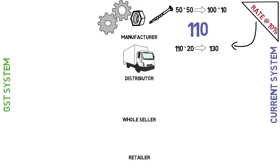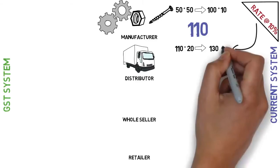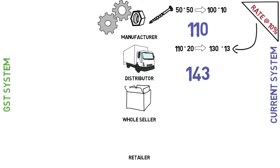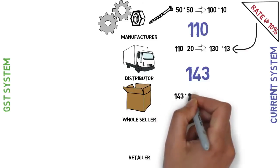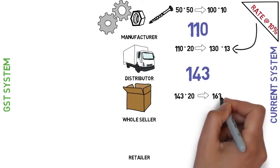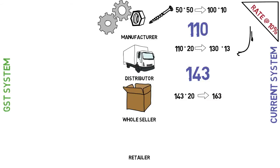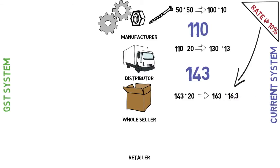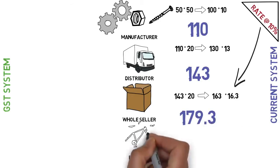The distributor adds value of rupees 20, which is his profit, so the price becomes 130. The distributor also sells it by adding 10 percent tax of rupees 13, so the product is 143 rupees. The wholesaler follows the same pattern: the price becomes 143 plus 20, that is 163, and adding 10 percent tax of rupees 16.3, sells it for 179.3 rupees to the retailer.